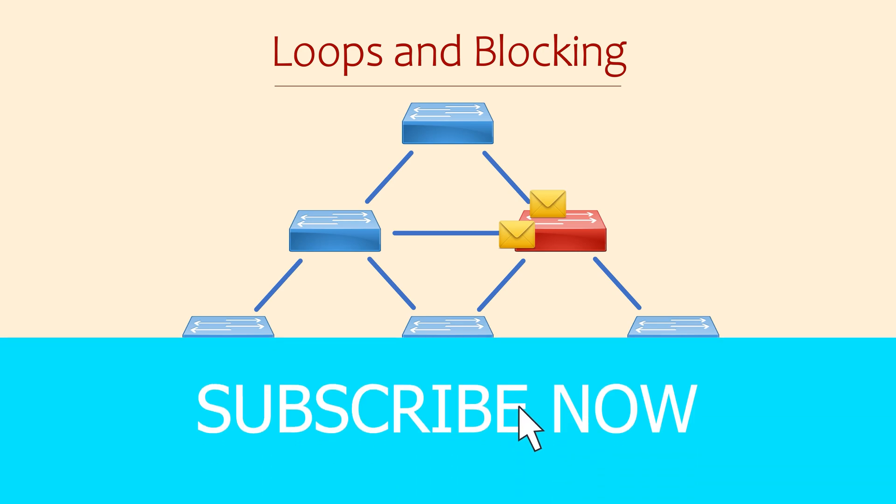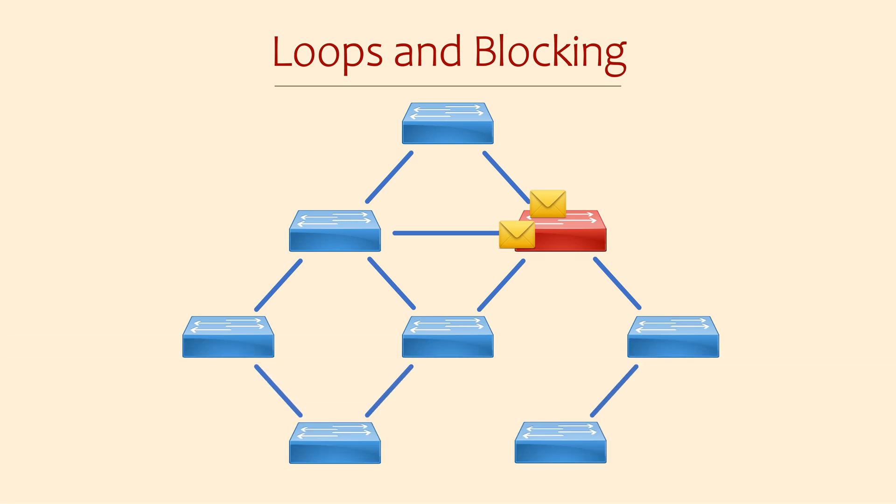Of course, the interface that receives the superior BPDU is the root port. What about the port that receives the inferior BPDU? This represents an alternate path to the root bridge. If there is more than one path to the root bridge, there is a loop.